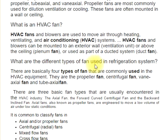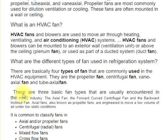There are basically four types of fan commonly used in HVAC equipment: the propeller fan, centrifugal fan, vanaxial fan, and tubaxial fan. There are also three basic fan types encountered in the HVAC industry: the axial fan, the forward curved centrifugal fan, and the backward inclined fan.